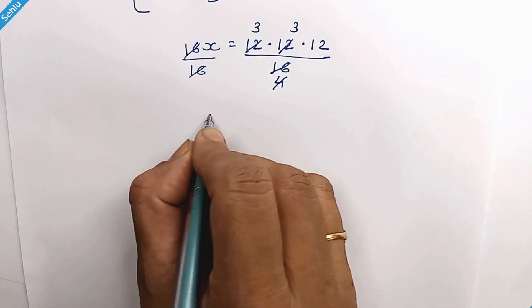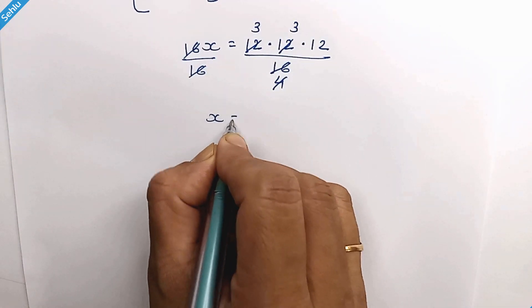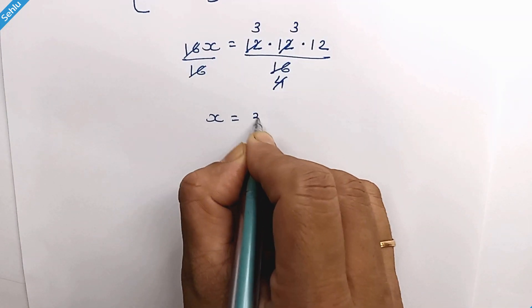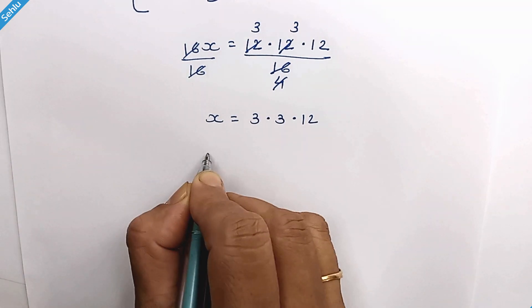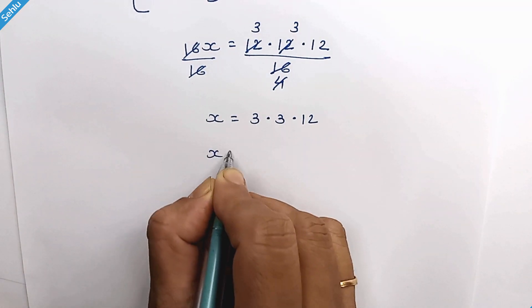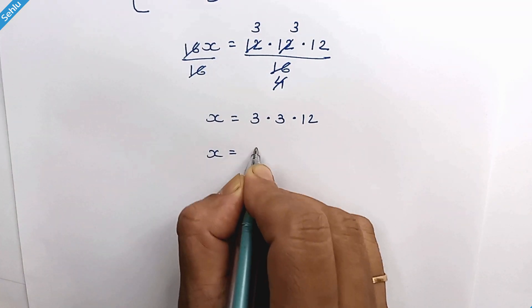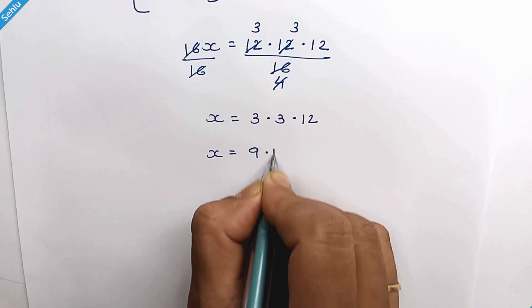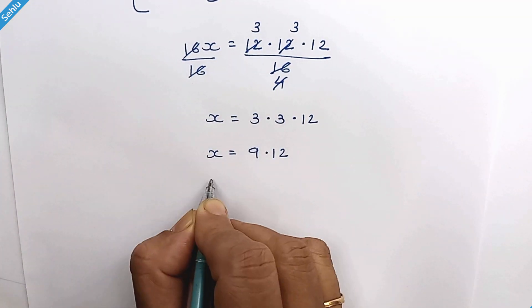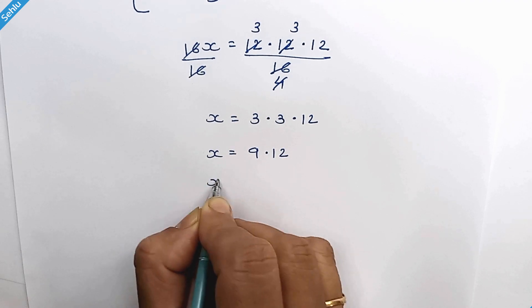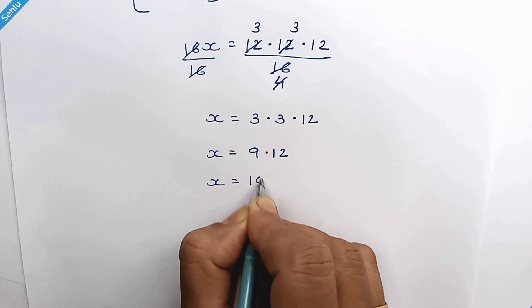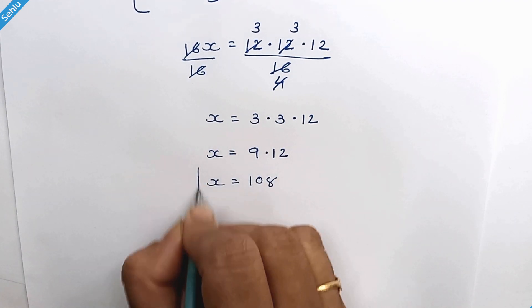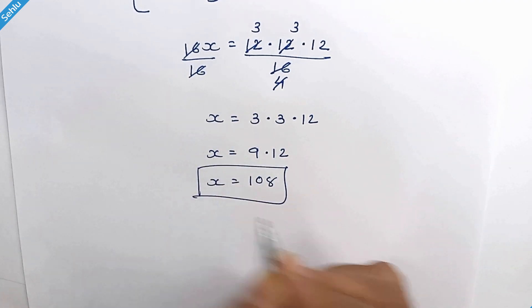4 threes are 12. So we have x is equal to 3 times 3 times 12. 3 times 3 is 9, and 9 multiplied by 12 is 108. That is the answer.